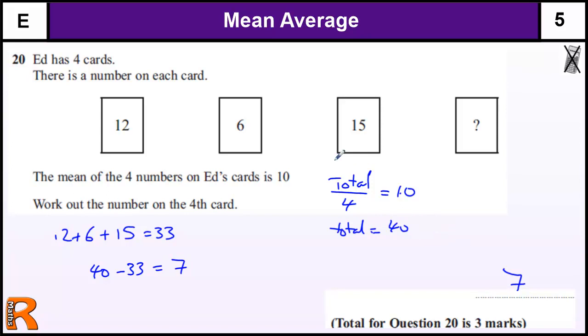And then one thing for doing something like this, total divided by 4 is 10, or a correct method that leads to the answer, or would have done if you haven't made a mistake.